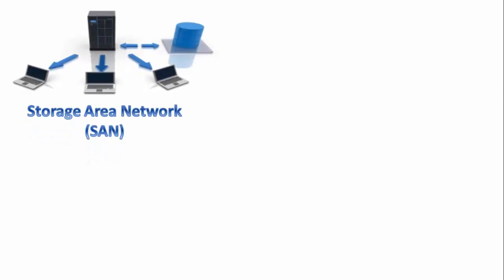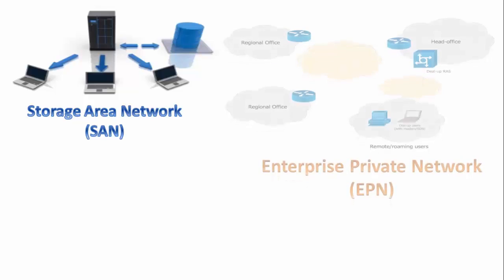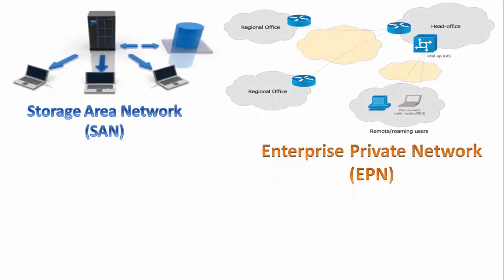Now there are some special purpose networks, such as Storage Area Networks — SAN. Storage Area Networks are used between various storage devices without connecting to the local area networks. Another type is Enterprise Private Network, which is a company's network used to connect regional offices to the head office. It is more secure and not necessarily connected to the outer internet.